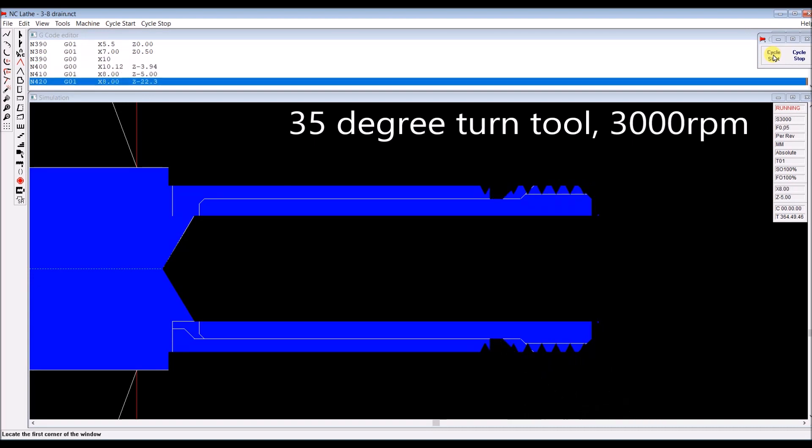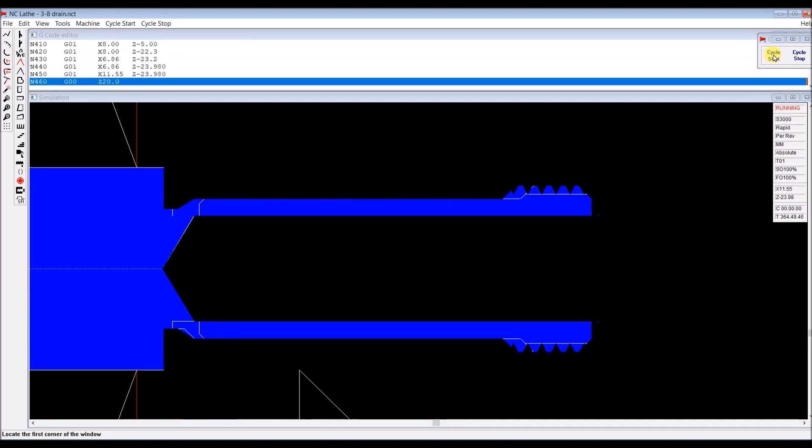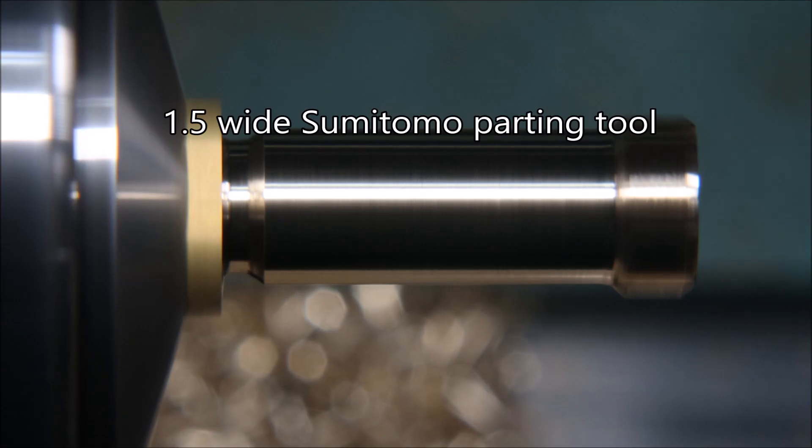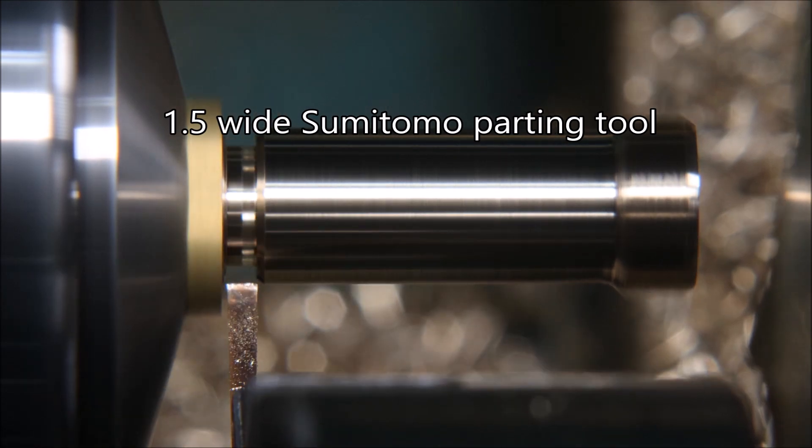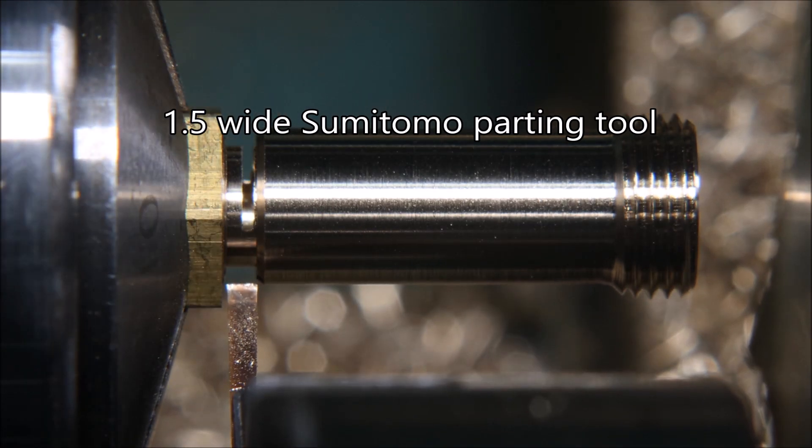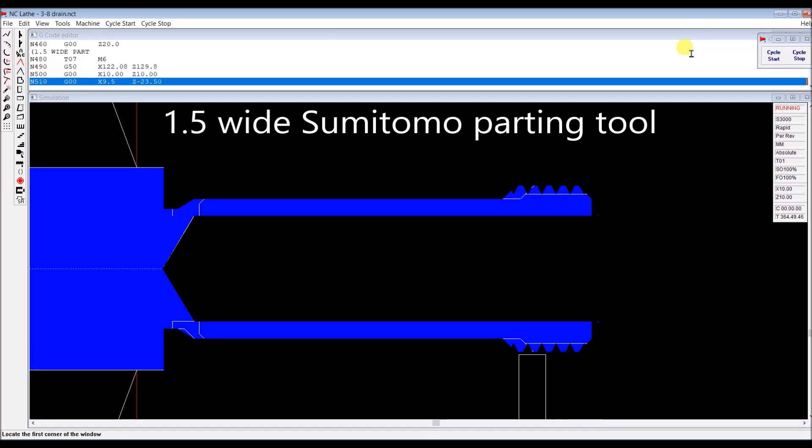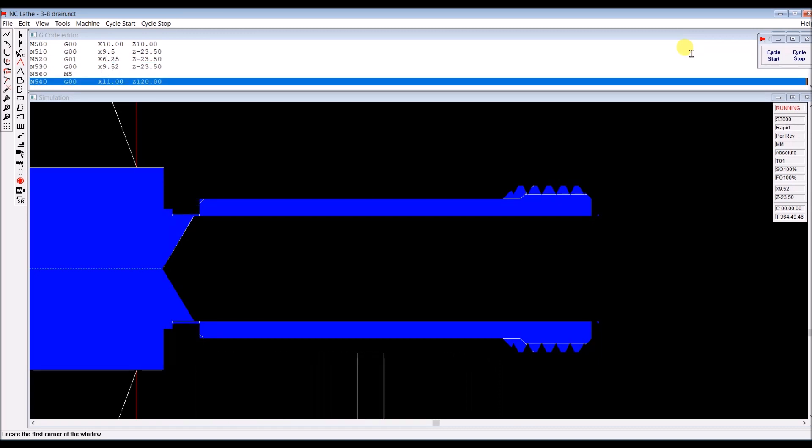The white graphic and the blue render don't agree because I didn't allow enough for the cutting of the backside of the insert. This is just a 1.5 wide parting tool from Sumitomo with a very sharp cutting edge.